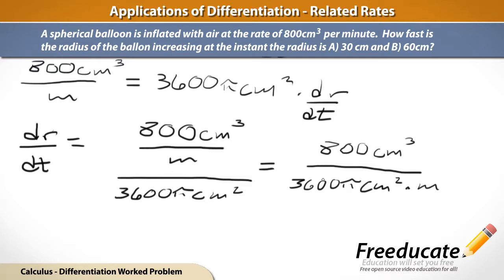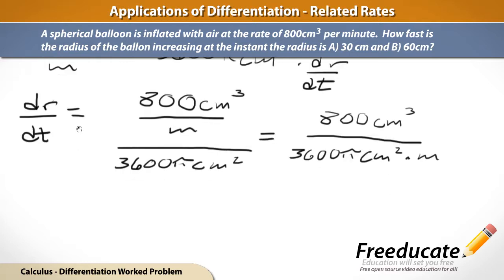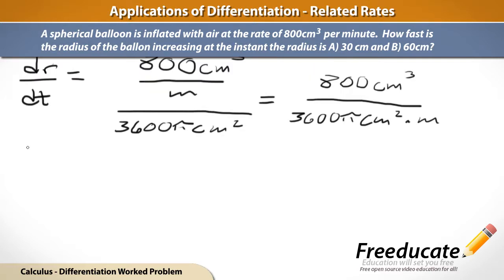So, after we finish canceling some of our stuff, what we're going to be given is that dr/dt is going to equal, this is just going to reduce to 2 over 9 pi centimeters per minute. So, at the instant that the radius of the balloon has reached 30 centimeters, the radius is changing at a rate of 2 over 9 pi centimeters per minute. So, we've solved for that exactly.